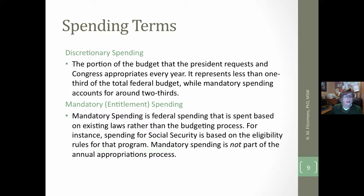There are two important spending terms to be familiar with: mandatory spending and discretionary spending. Mandatory spending is federal spending that is based on existing law rather than the budgeting process. The two really big areas are Old Age Survivors Disability Insurance and Medicare, which are mandatory spending because that spending is authorized in federal statute. Discretionary spending is the portion of the budget that the president requests and Congress appropriates each year, coming out of those 12 appropriation bills.